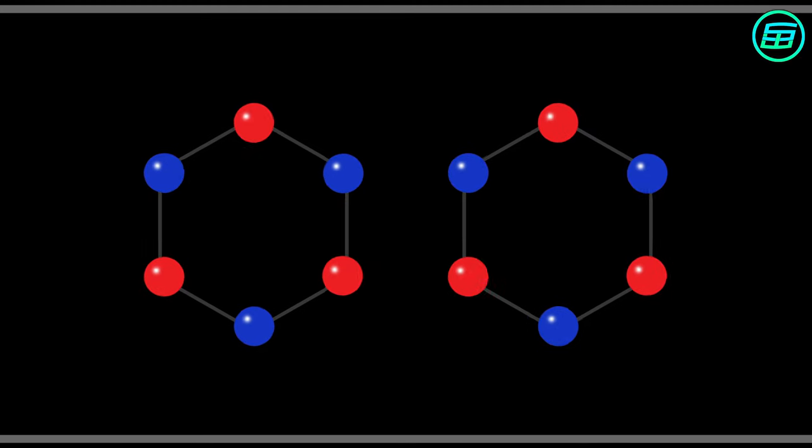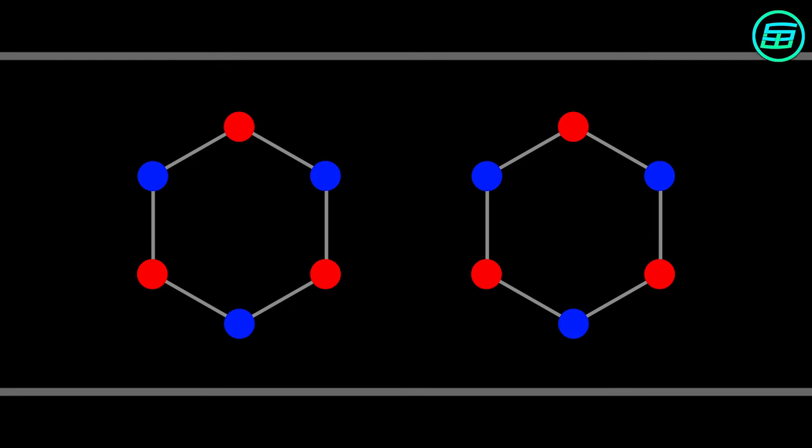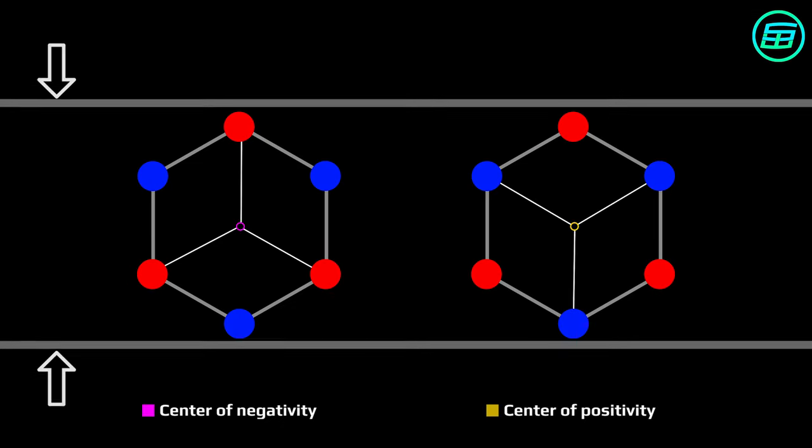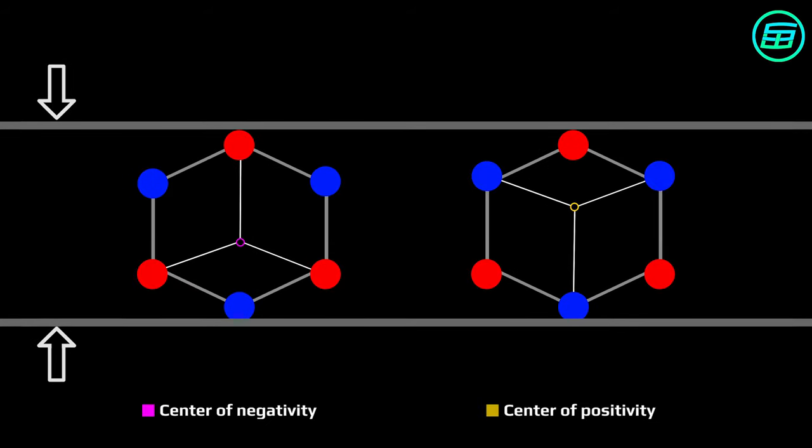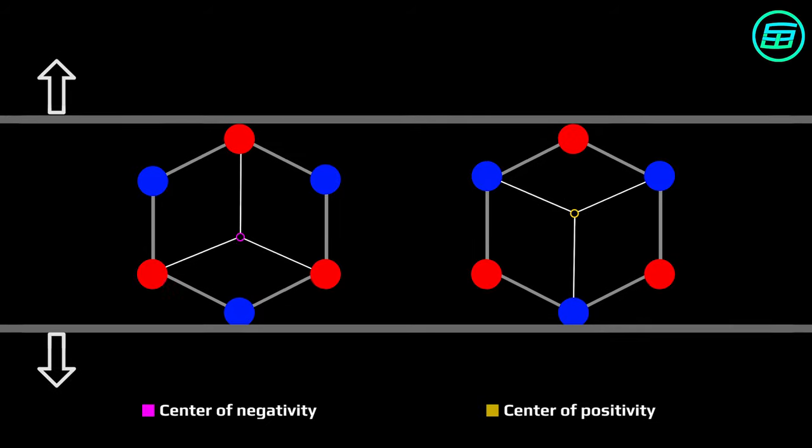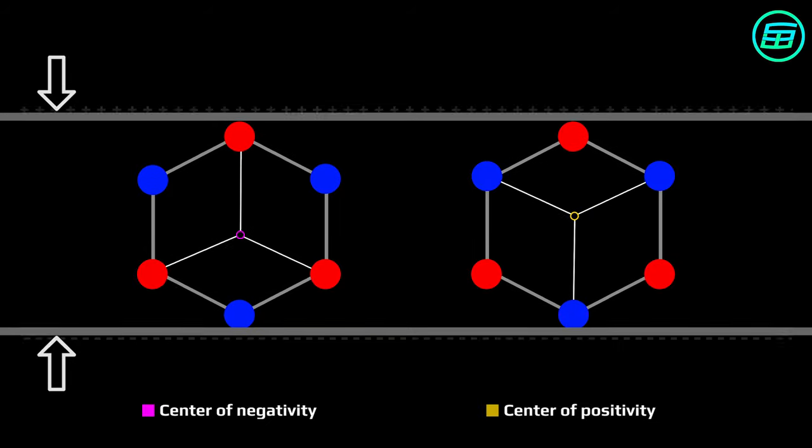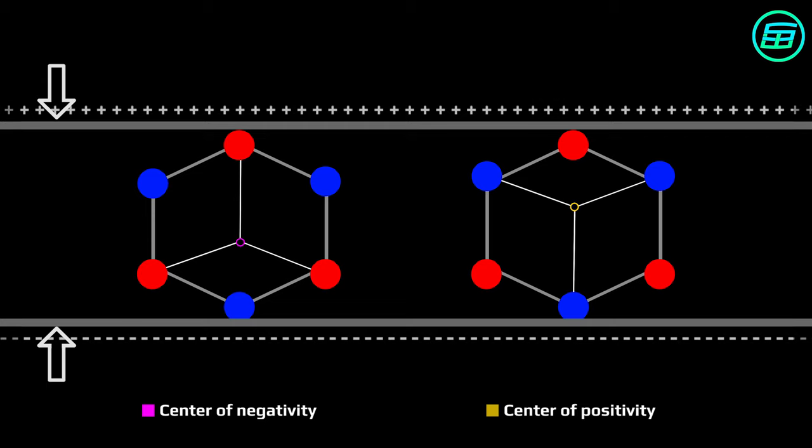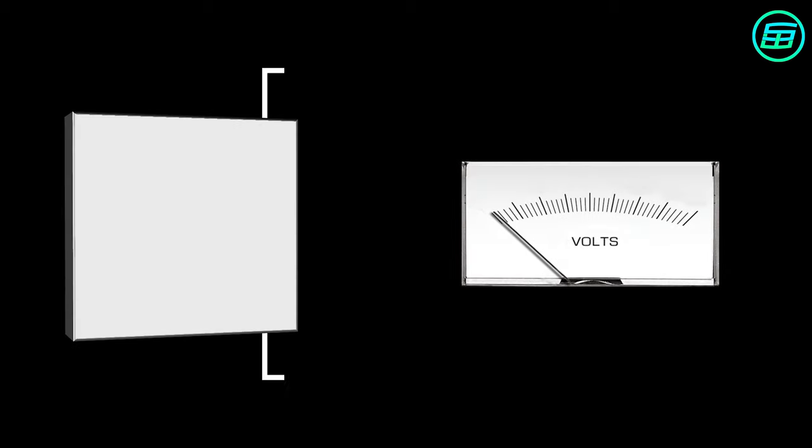If we apply mechanical stress to the lattice like this, the center of negativity moves towards the bottom, whereas the center of positivity moves upward. So positive charge builds up at the top of the crystal and negative charge at the bottom. If we wire up this charged area, we'll produce a flow of electricity.